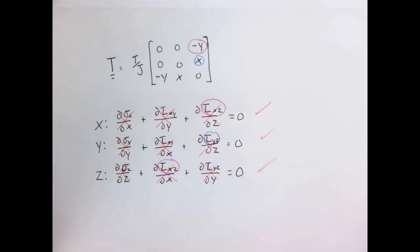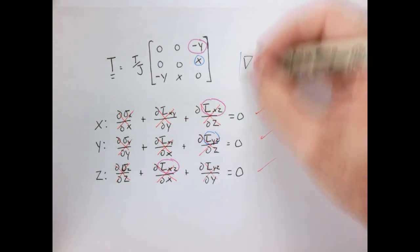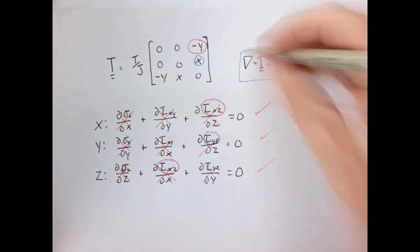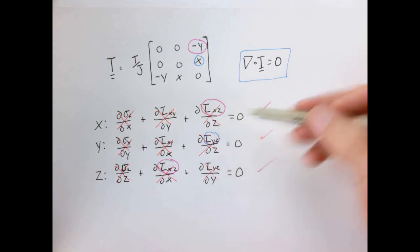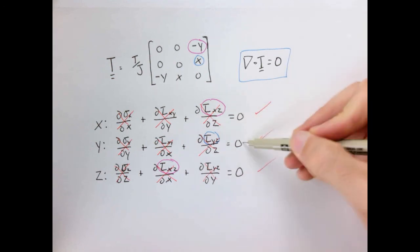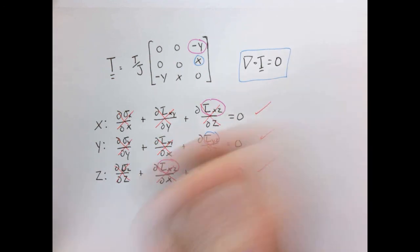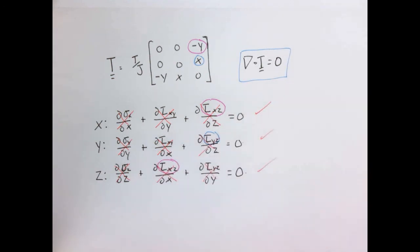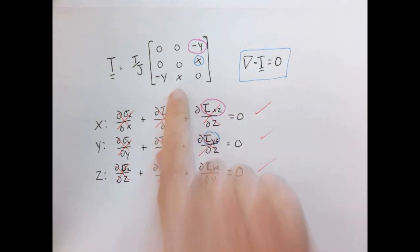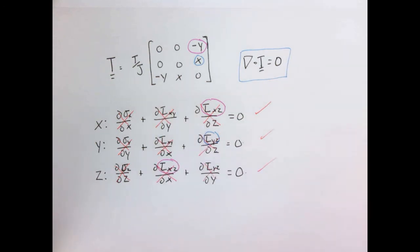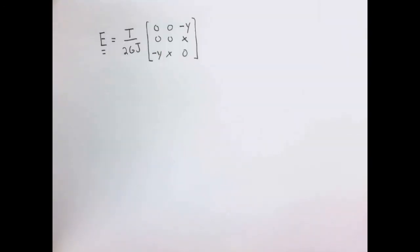So our fundamental equilibrium equation — written compactly as the divergence of the stress tensor equals zero, but given in component x, y, z form — is automatically satisfied by our assumed form of the stress tensor.